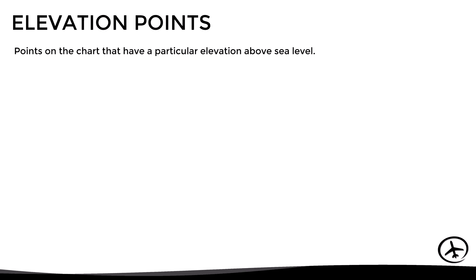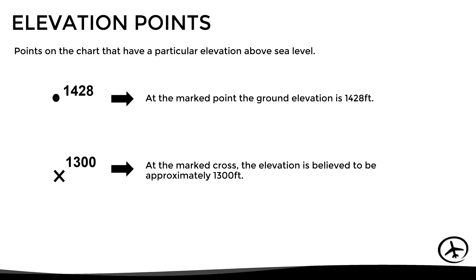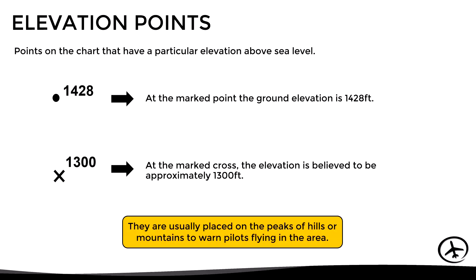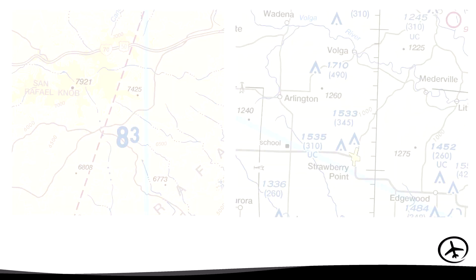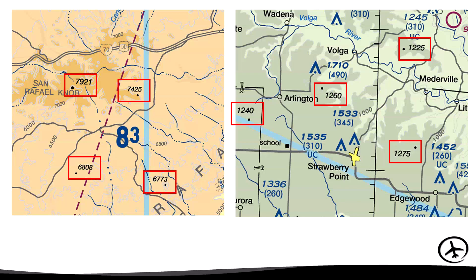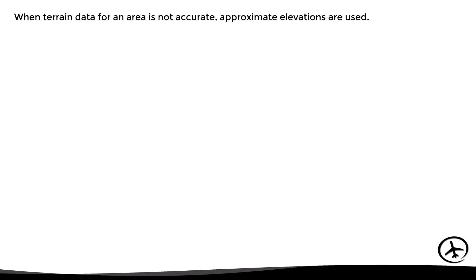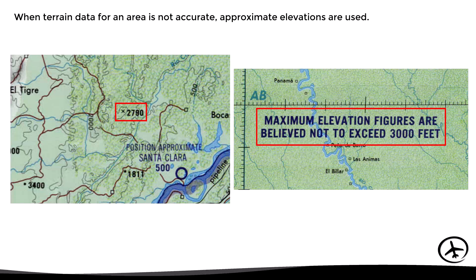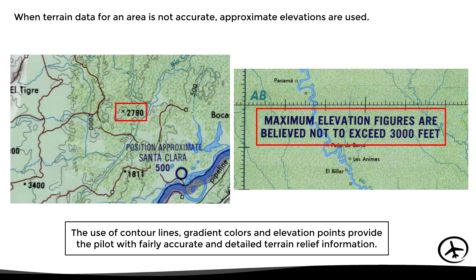Another way to warn pilots about high terrain is by means of elevation points distributed along the chart. These are placed on the peaks of hills or mountains to warn pilots flying in the area. A black dot means the elevation is exactly the one indicated, while a black cross means the exact elevation is uncertain but is believed to be the value indicated. In some charts where terrain data is not accurate, approximate elevations are used. The combination of contour lines, gradient colors, and elevation points provides the pilot with fairly accurate and detailed terrain relief information, which is essential for flight planning.